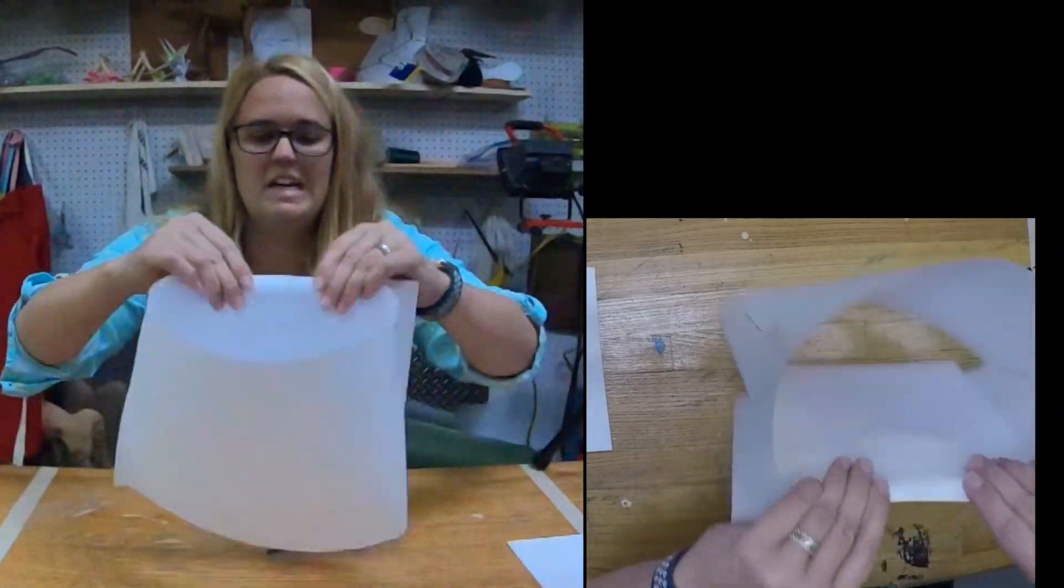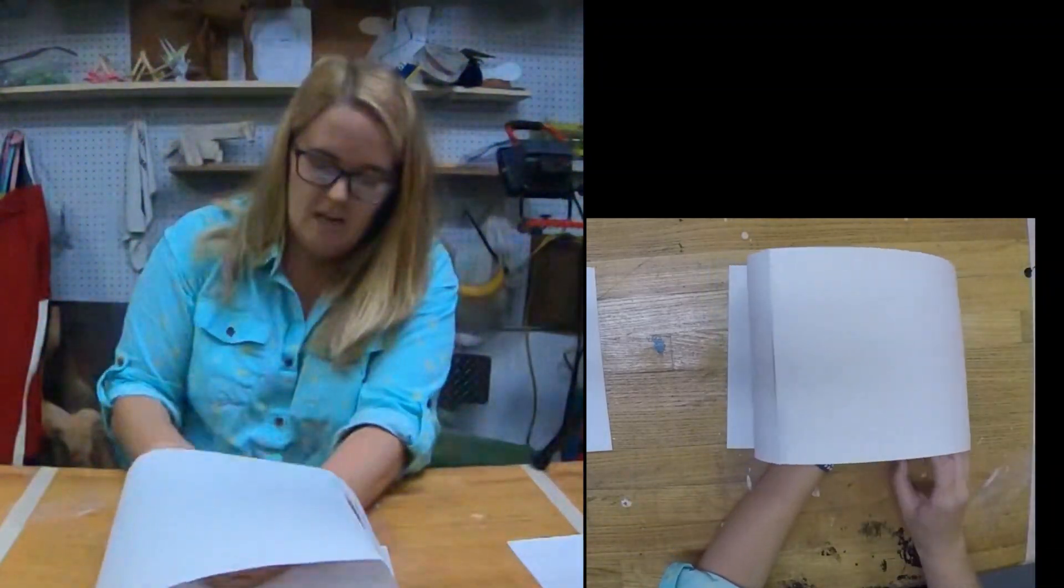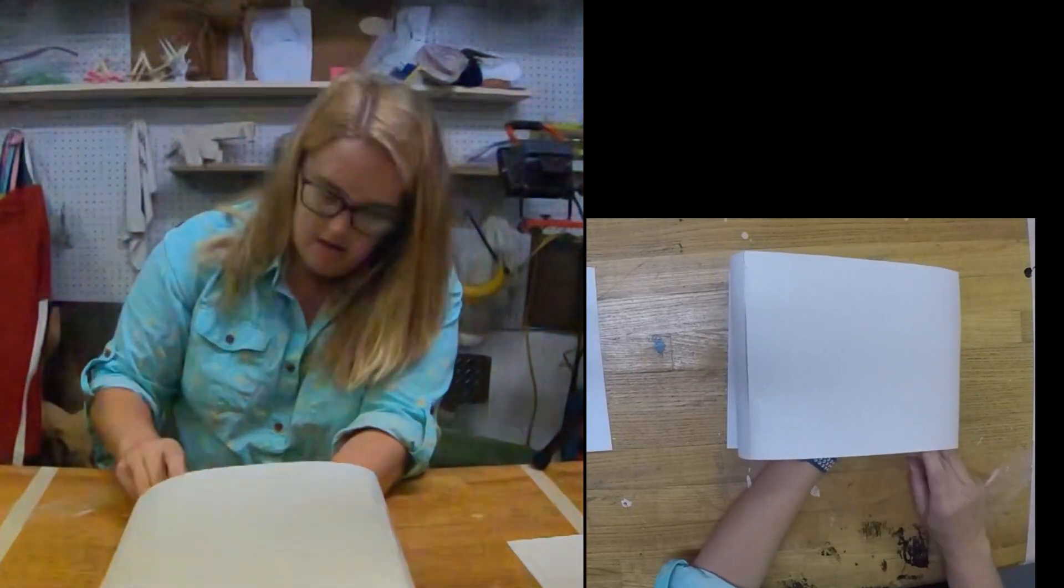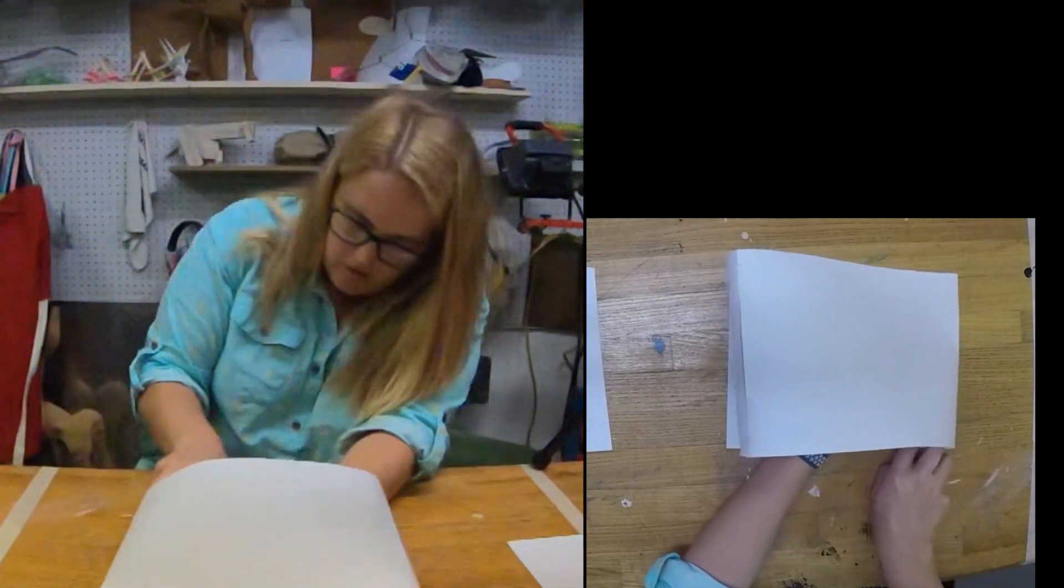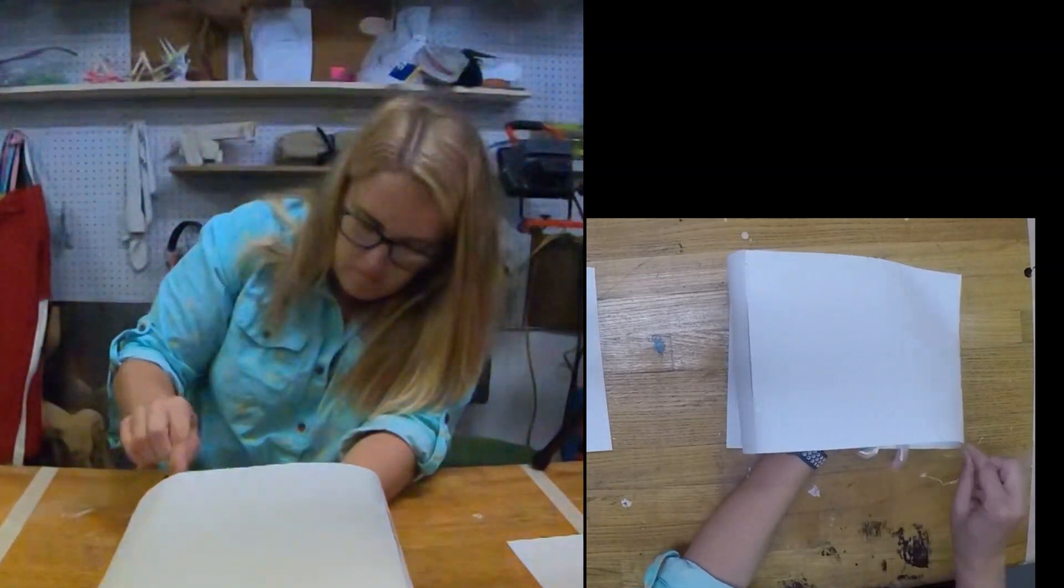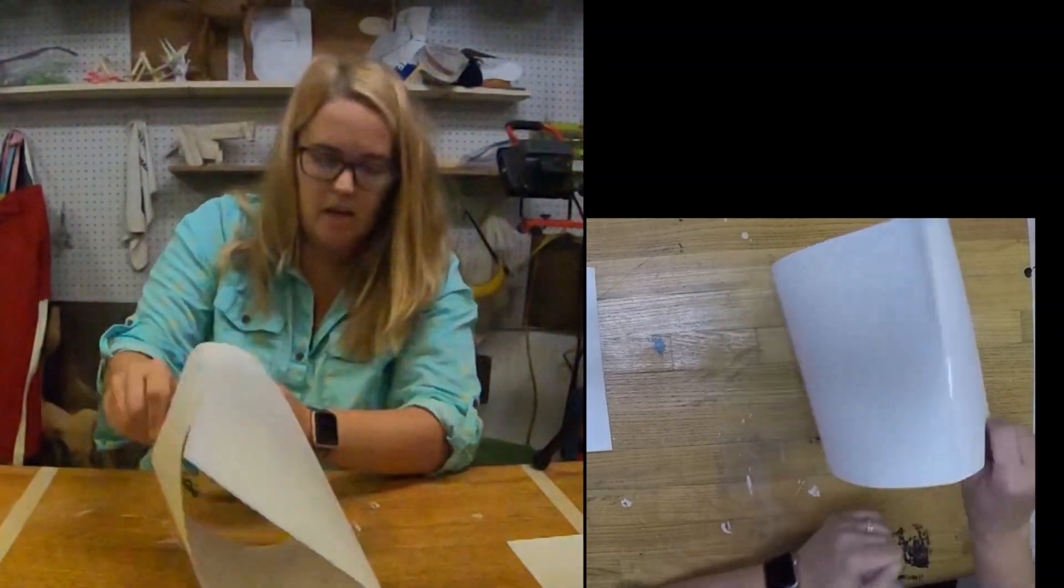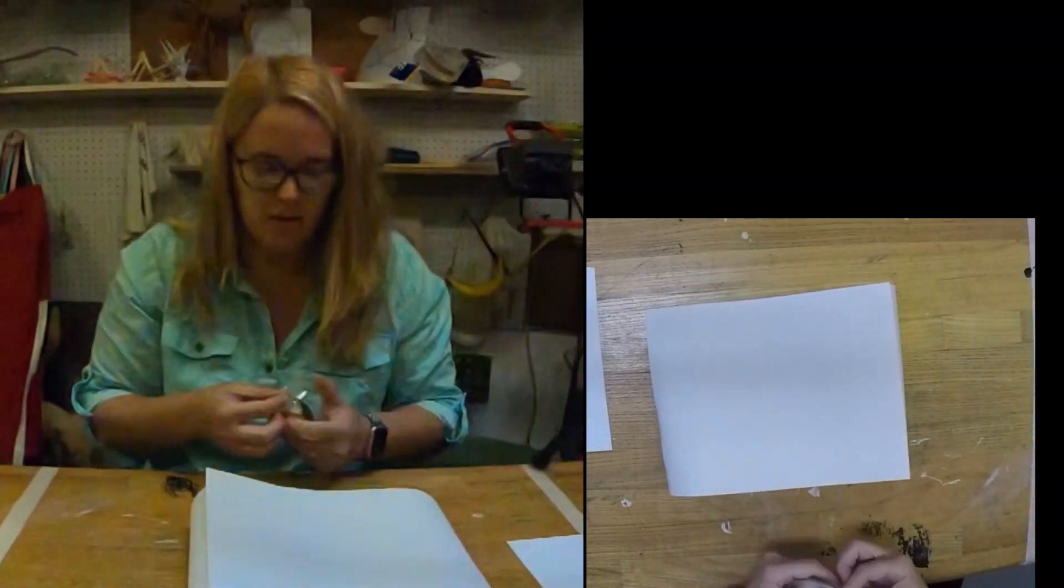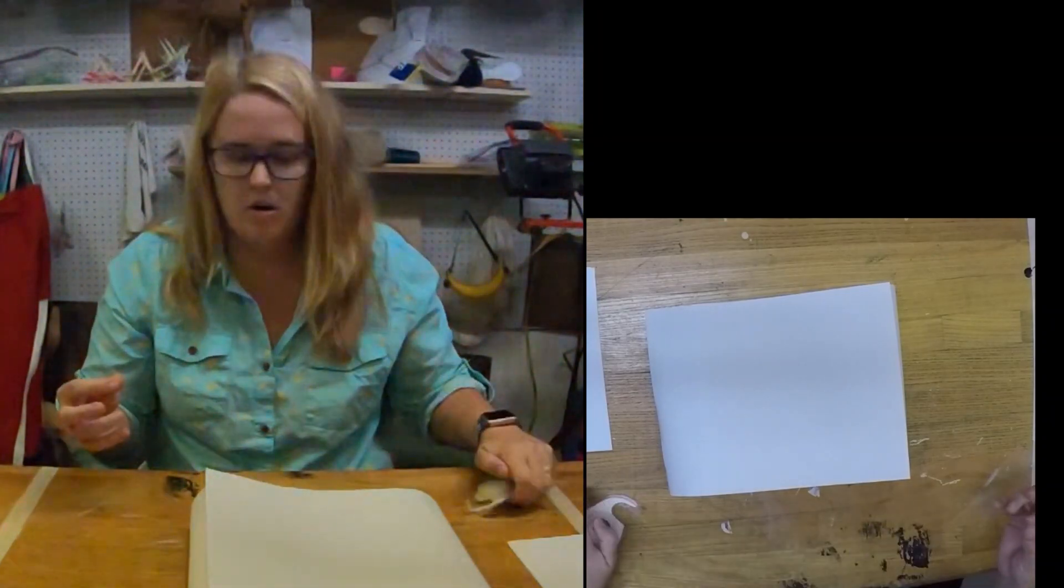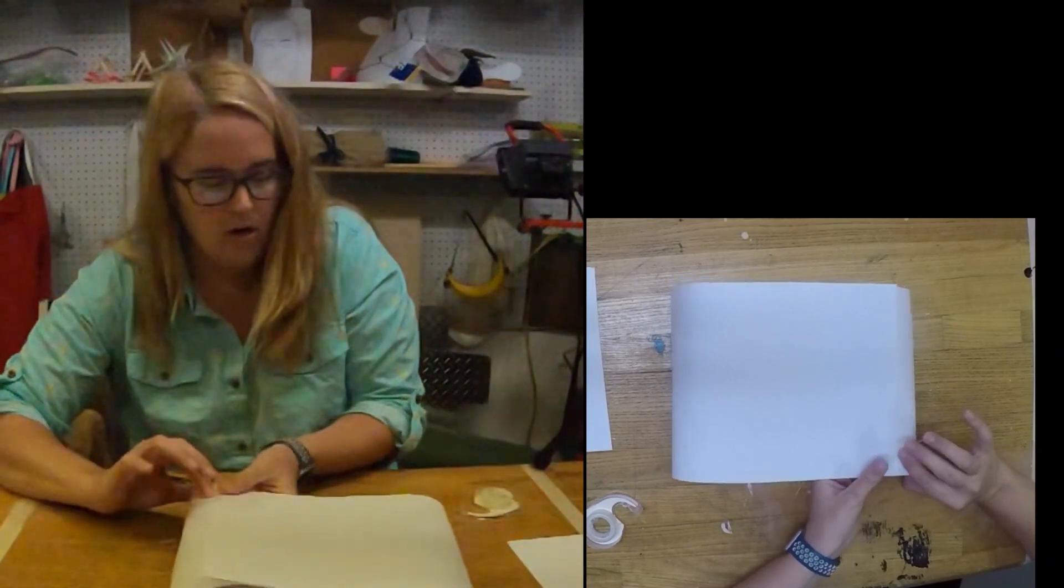What I'm doing is lining this up so it'll be nice and square. Get my tape. And I'm going to tape them down at the overlap. I'm going to do it on the inside and again on the outside.